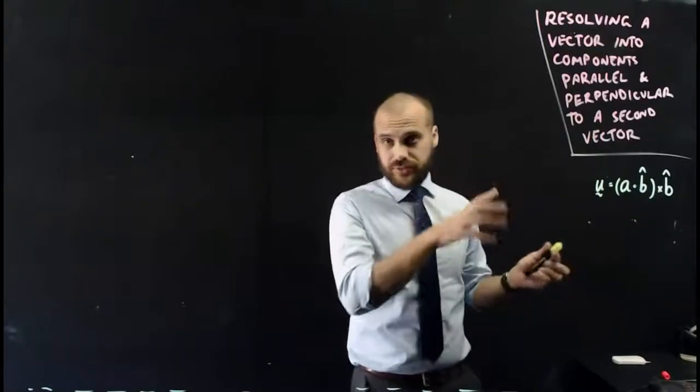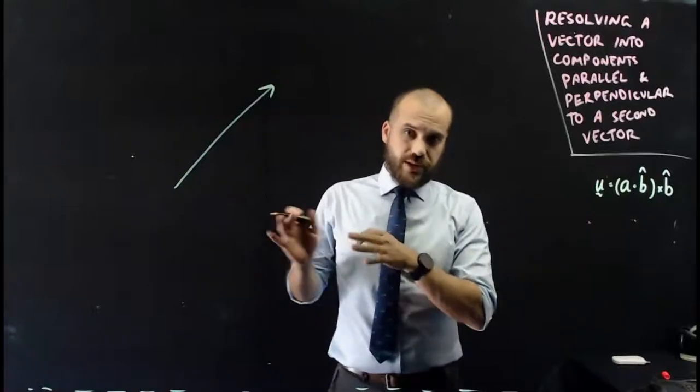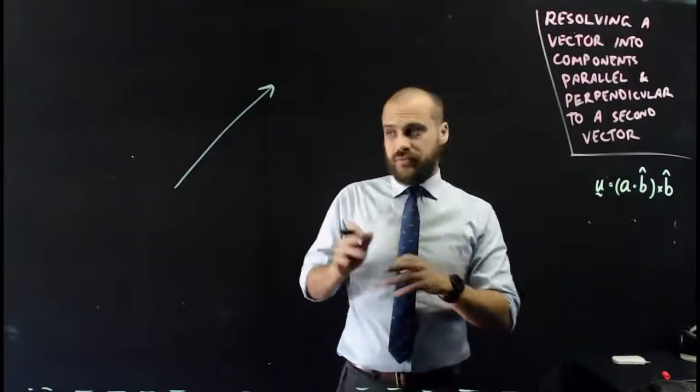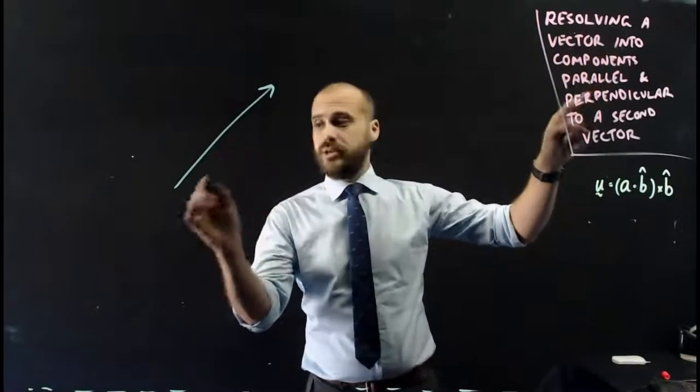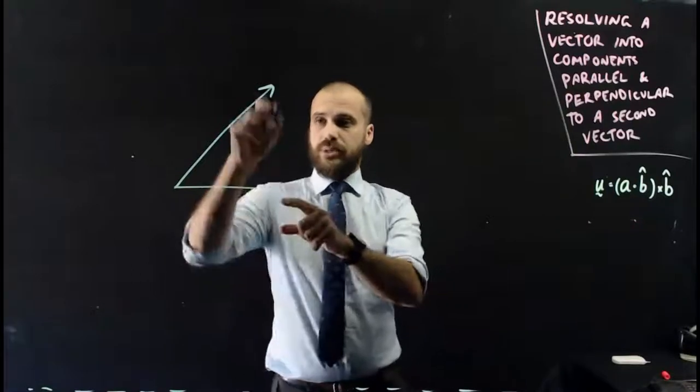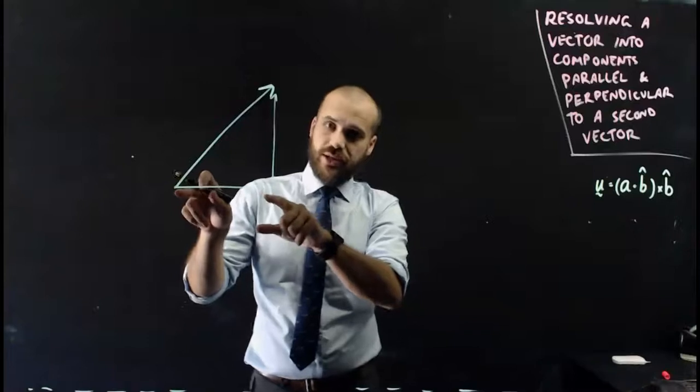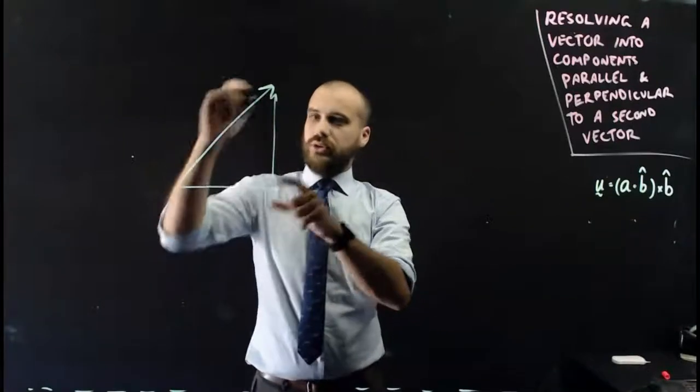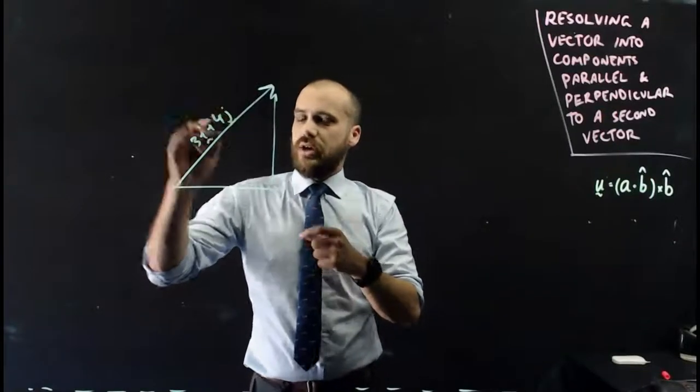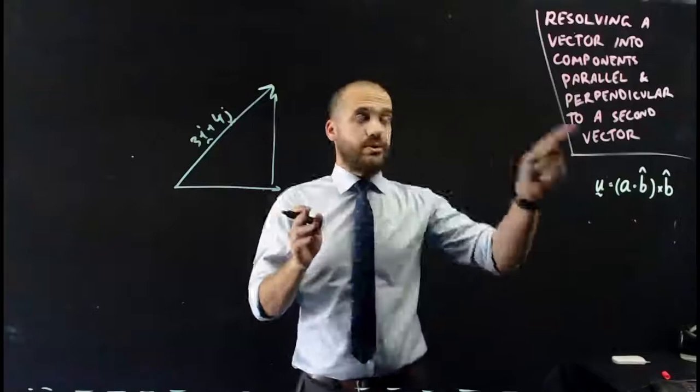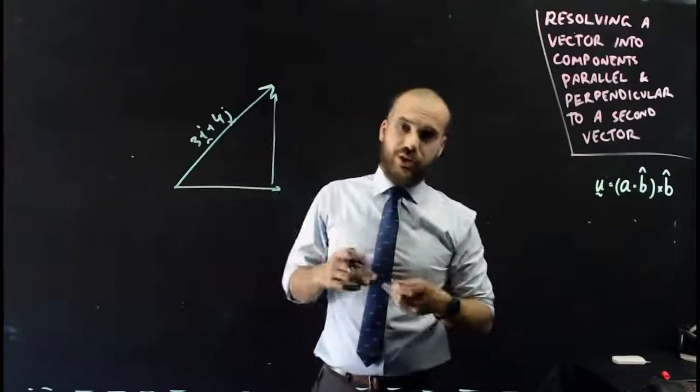Now, we actually do this all the time. For instance, if I give you this vector here, we can talk about that in terms of an i and a j vector. What I'm doing is resolving a vector into components parallel and perpendicular to another vector, parallel to the i vector which is perpendicular to the j vector. So I can call this vector 3i plus 4j. I'm resolving it into something parallel to i and something perpendicular to i, which is j.